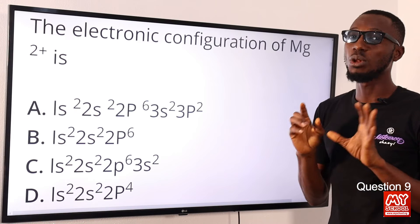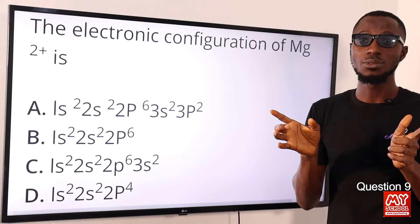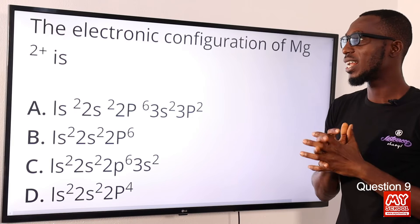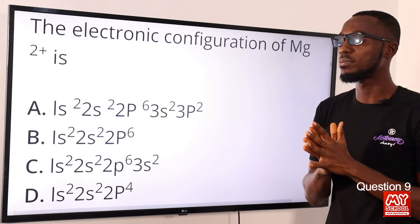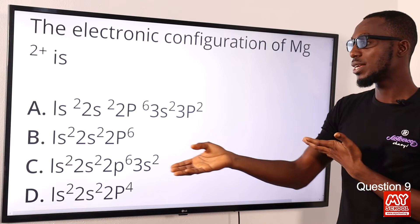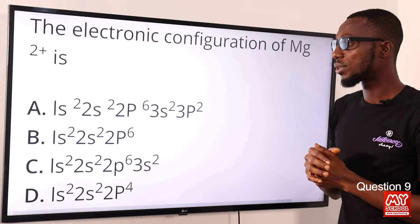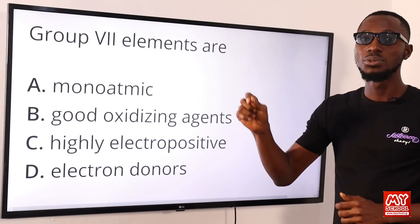Instead of having 1s² 2s² 2p⁶ 3s², we are told that it has lost two electrons—the electrons in the outermost shell. That means the electron configuration of a magnesium ion that has lost two electrons will just be 1s² 2s² and 2p⁶. The 3s² electron has been lost.